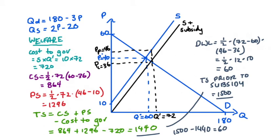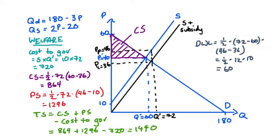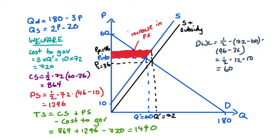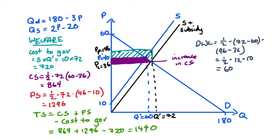A third way to see the deadweight loss is to view it as the portion of the government's injection that was neither transferred to consumer surplus nor producer surplus — essentially wasted. The government rectangle partly increases consumer surplus, partly increases producer surplus, and the remainder — this triangle — is deadweight loss that was not transferred to anyone.